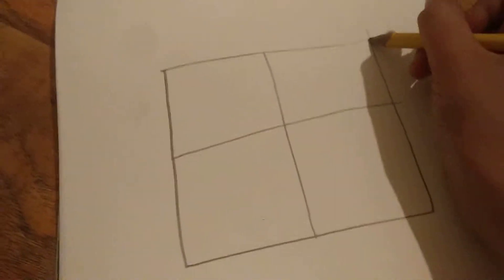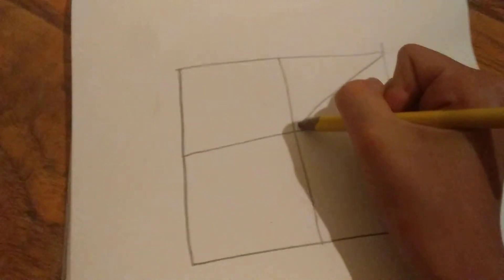transform that square into a four square. And then, you're going to want to put a line through it, like that.